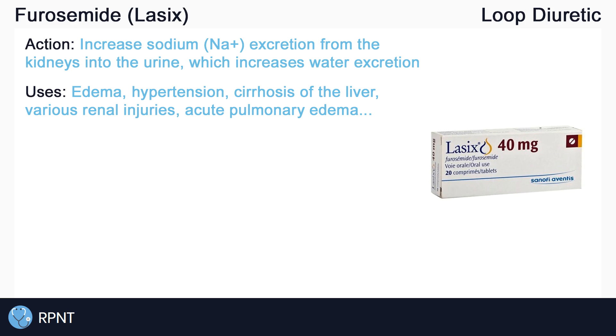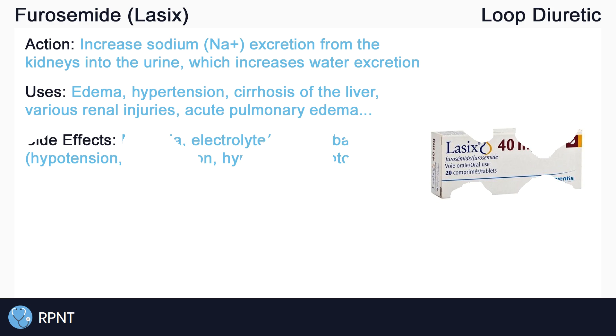Furosemide can also be used in the treatment of cirrhosis of the liver, various renal injuries, and can be given IV in emergent situations such as acute pulmonary edema.